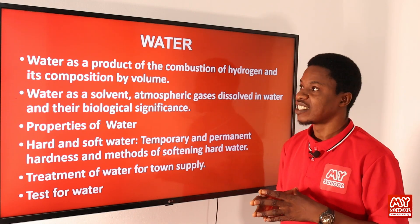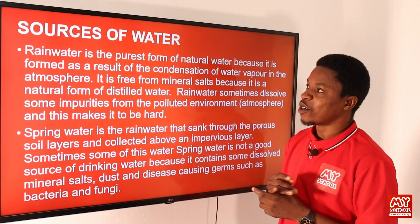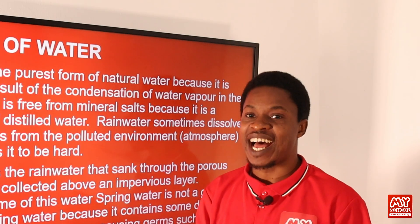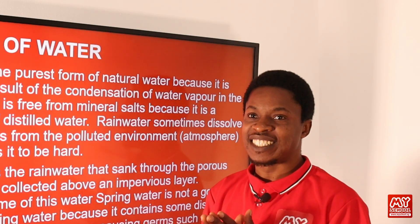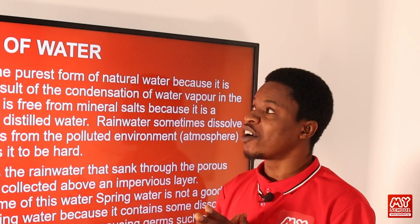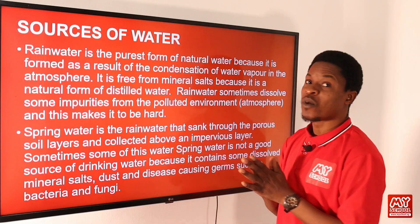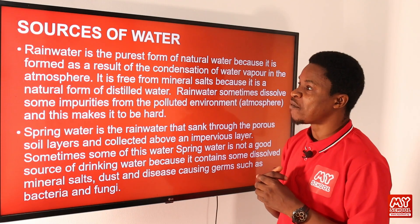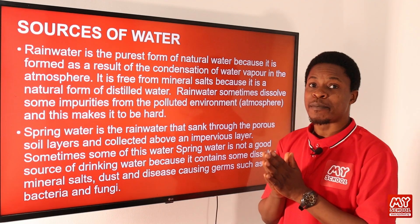Sources of water: many schools of thought consider rainwater to be one of the purest forms, though some say it is dirty because it is in the atmosphere. However, it is interesting to know that the purest form of natural water is actually rainwater, because it is formed as a result of the condensation of water vapor in the atmosphere.